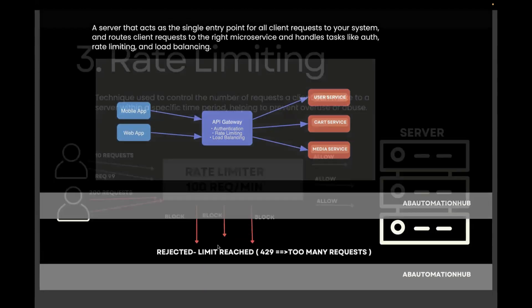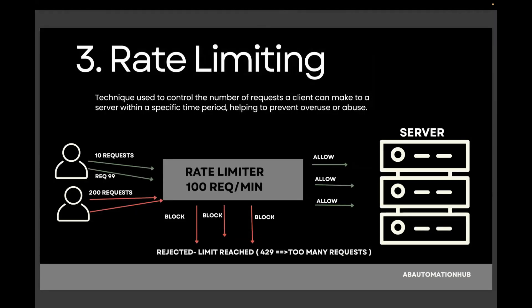Next topic is rate limiting — one of the very famous topics used when testing any API. Rate limiting is a technique used to control the number of requests a client can make to a server within a specific period of time. It helps prevent overuse or abuse. For example, you set rules like 100 requests per minute per user or 1,000 requests per hour per API key. When the limit is reached, it returns a 429 status code, meaning too many requests.